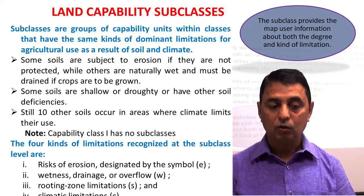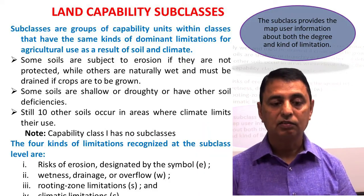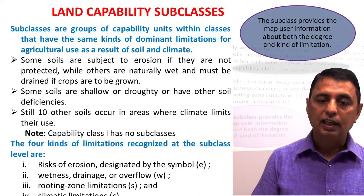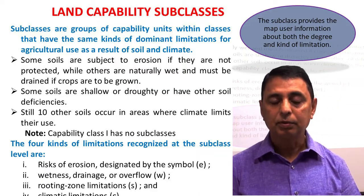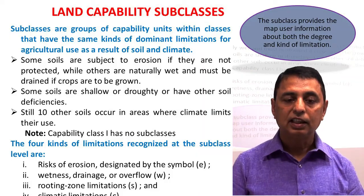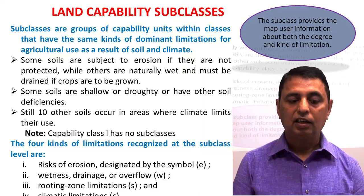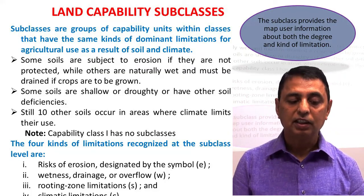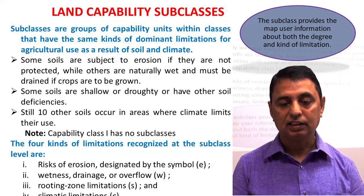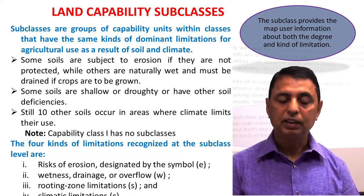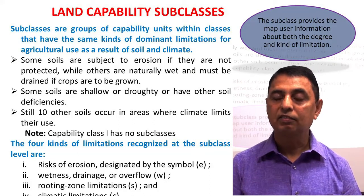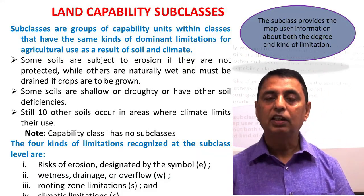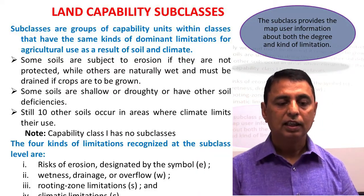An important note about land capability subclasses: capability class one has no subclasses. This must be noted because in subclasses we are providing information about the degree and kind of limitations, and land capability class one has no limitations. So in subclasses we will not discuss class one.